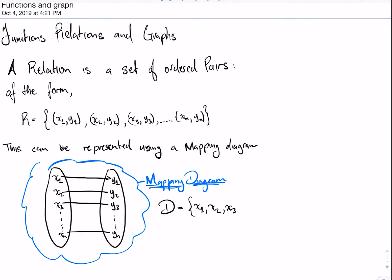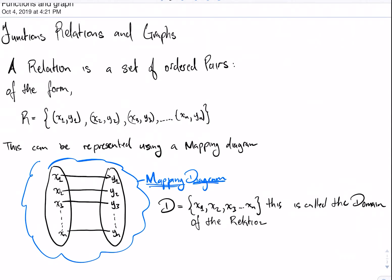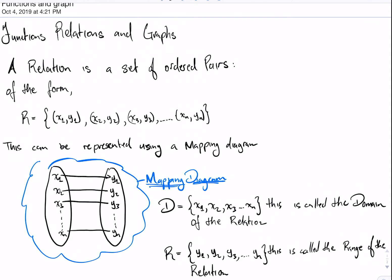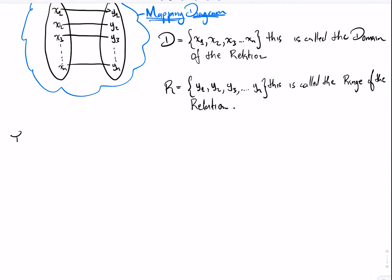D, which is the set of all the X values — x1 through xn — is called the domain of the relation. R, which is the set of all the Y values, is called the range of the relation, otherwise called the codomain in some situations.